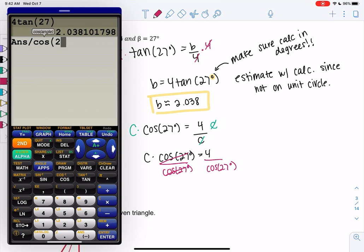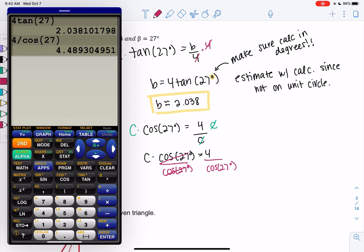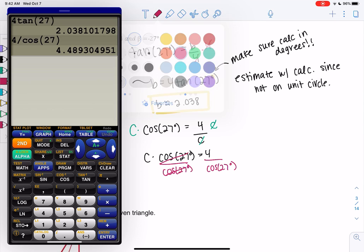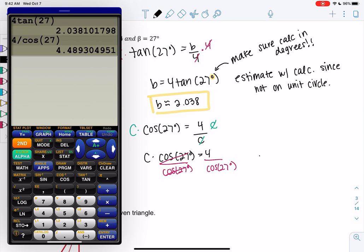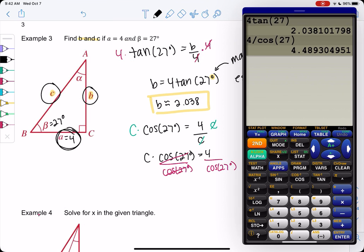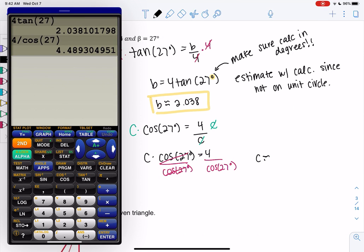So 4 divided by cosine of 27. And we get, I'll use my squiggly lines to say we rounded, 4.489. Just a couple decimal places. And again, this is an estimate because we had to round.